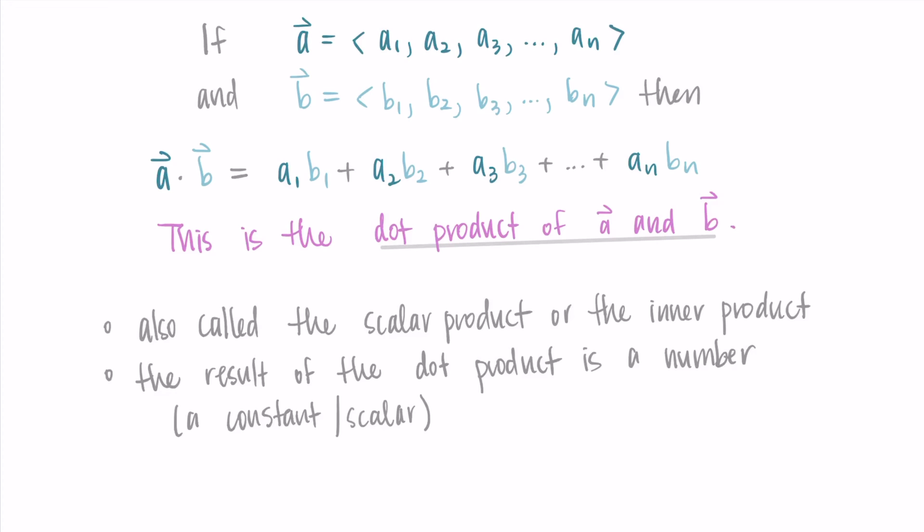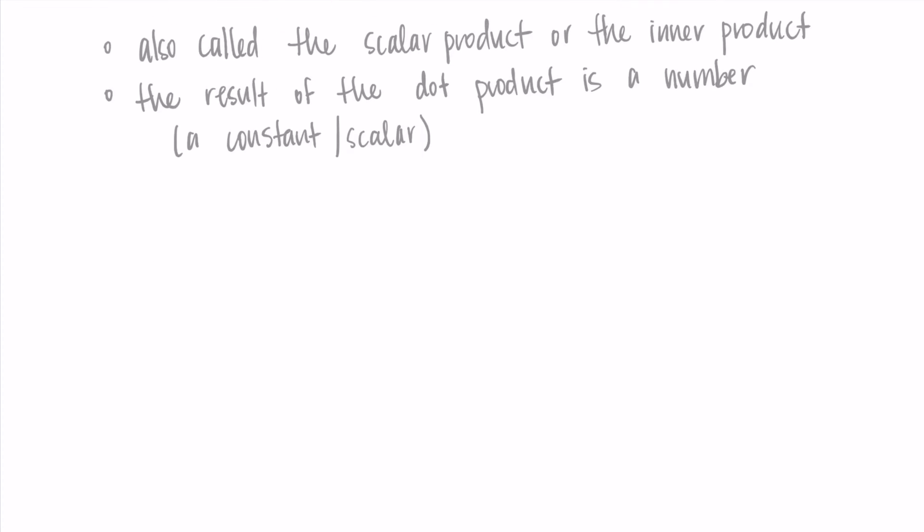So I defined this in n dimensions, but let's talk about what it looks like in two and three dimensions since those are the spaces we're most frequently working in. If we have the vector a is equal to x1 y1 and the vector b is x2 y2, then the dot product of a and b is equal to x1 x2 plus y1 y2.